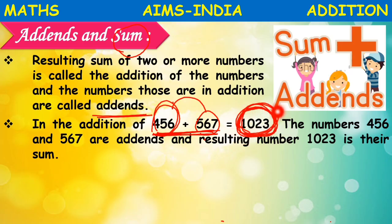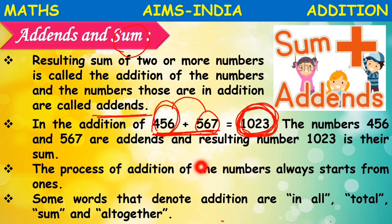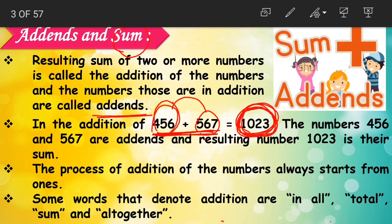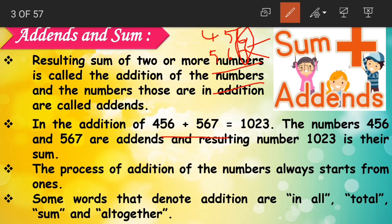We got the number 1023 by adding — so this is called the sum, and those two numbers which we added are called addends. The process of addition always starts from the ones place. For example, with 456 and 567, we start adding from the right side, which is the ones place.